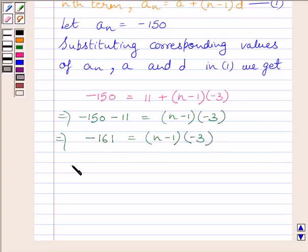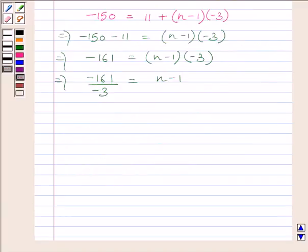Now dividing both sides by minus 3 we get minus 161 upon minus 3 is equal to n minus 1. Now minus and minus sign will cancel each other and we get 161 upon 3 is equal to n minus 1.